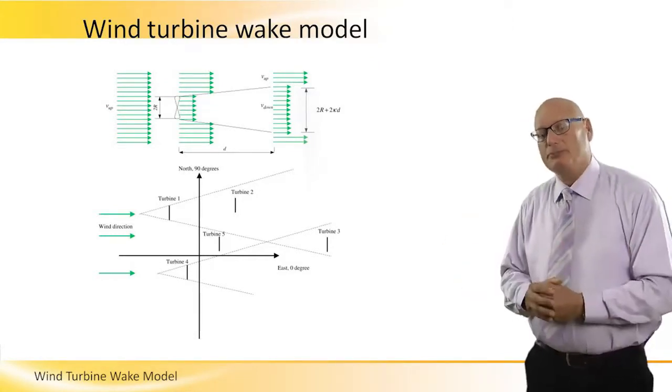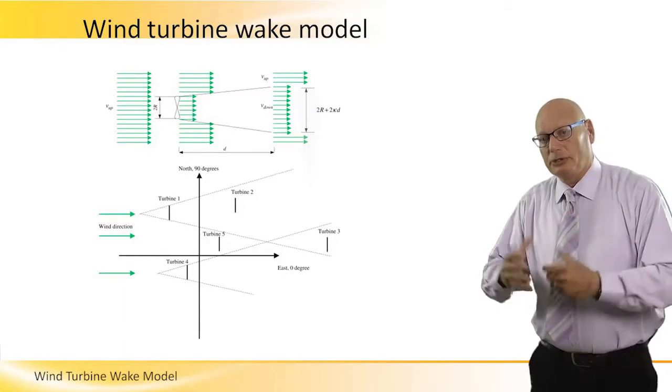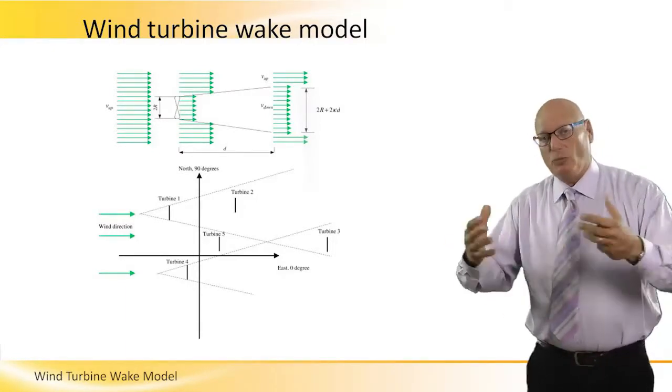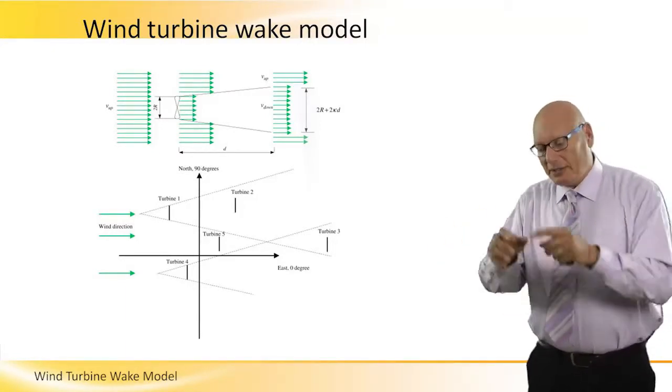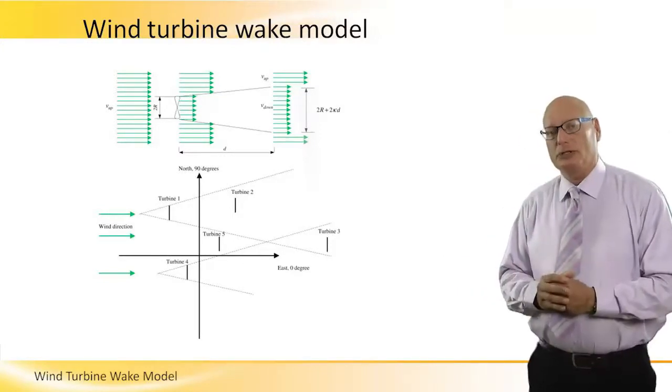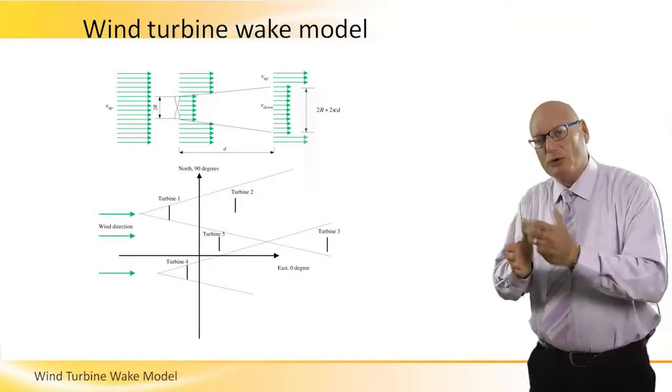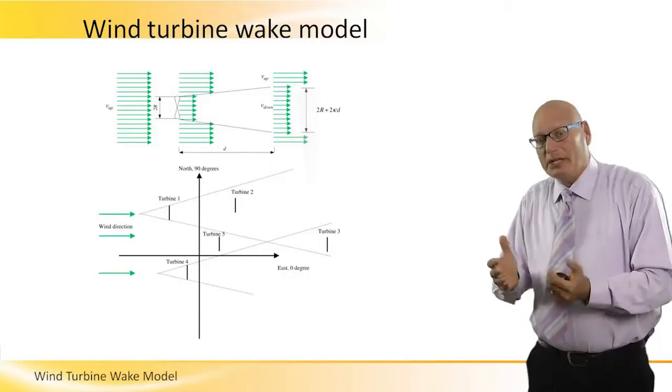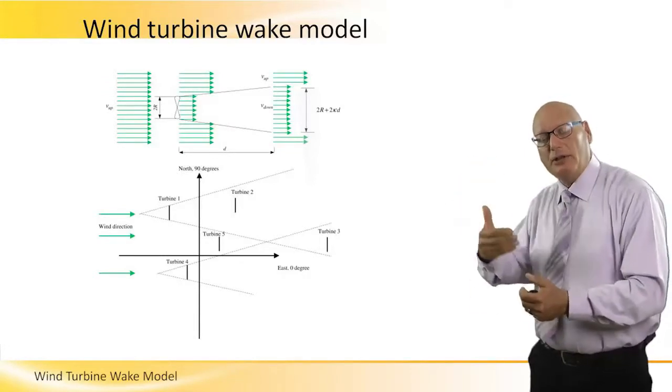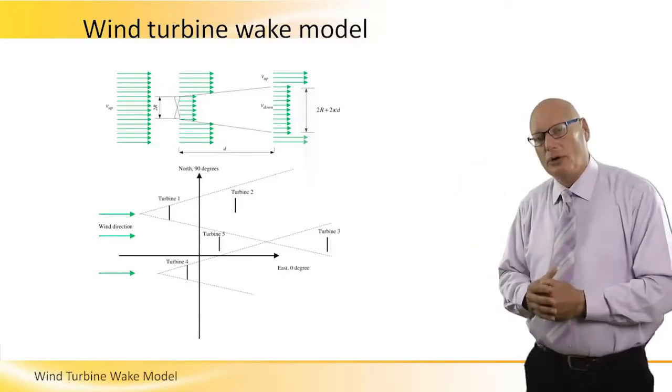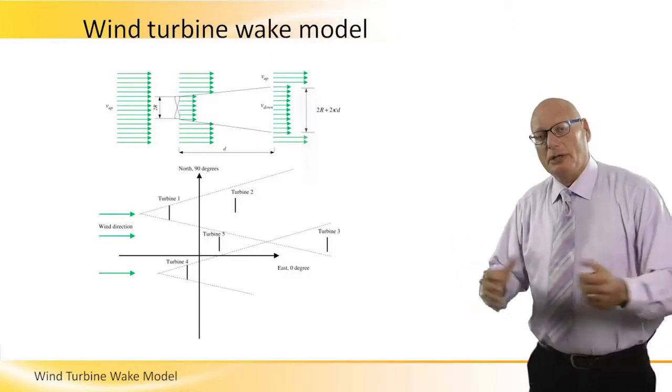Especially if we talk about large parks. If we talk about a park which is 100 turbines and they are in a chessboard configuration, meaning X and Y coordinates, we might come out with a 10-15 kilometers long wind farm.